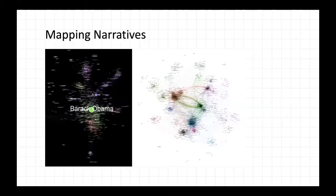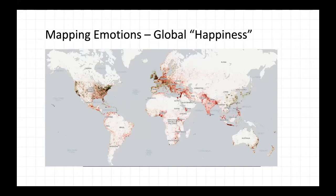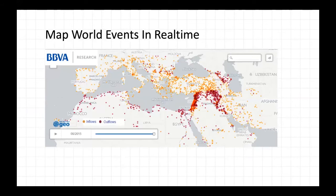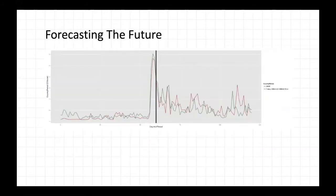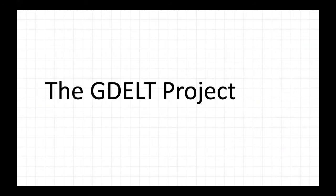Same thing with narratives — trying to reach beyond the physical events described in the news towards the narratives captured within. This allows us to map emotions around the world, happiness through the eyes of news media: not how people are actually happy, but how the news media casts that. We can look at events in real time, capturing patterns across the world — taking billions of news articles, extracting patterns, and even forecasting the future by looking to the past to understand what might happen in the present. That's really the focus of the GDELT project.